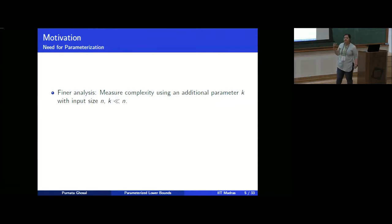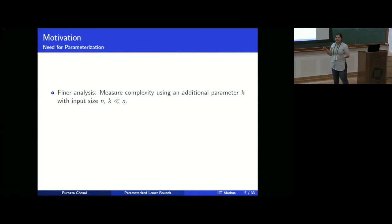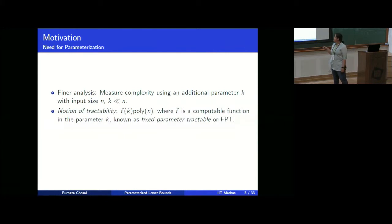We consider the parameterized setting because it allows for finer analysis. In this setting we compute the complexity of any problem in terms of both the input size and an additional parameter. Because for the same problem we can consider different parameters, it can be seen as a finer analysis. In the classical setting the notion of efficiency is polynomial in the input size; here the notion of efficiency is f(k) times polynomial in the input size, where f is any arbitrary computable function. This notion is known as fixed parameter tractable.